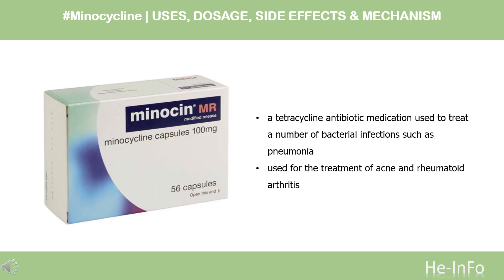Minocycline, sold under the brand name Minocin among others, is a tetracycline antibiotic medication used to treat a number of bacterial infections such as pneumonia. It is generally less preferred than the tetracycline doxycycline. Minocycline is also used for the treatment of acne and rheumatoid arthritis. Minocycline was patented in 1961 and came into commercial use in 1971. It is available as a generic medication.